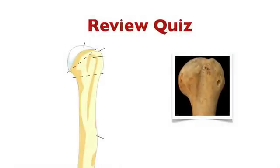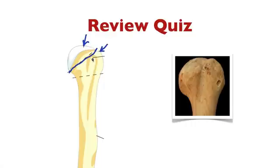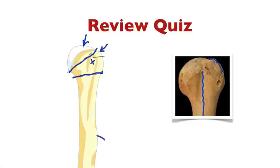Let's review. You can turn your volume down to test your skills and see how much you remember. Here we have the head of the humerus, the anatomical neck, the greater tubercle, and the lesser tubercle. This would be the deltoid tuberosity. This structure here is the intertubercular groove or the bicipital groove. On the greater tubercle, we have the superior facet, the middle facet, and the inferior facet. Here we have the crest of the greater tubercle, or lateral lip, and the crest of the lesser tubercle, or medial lip of the intertubercular groove.